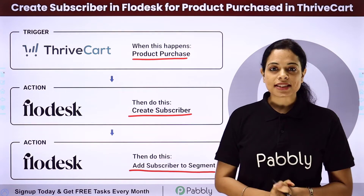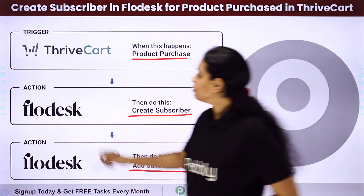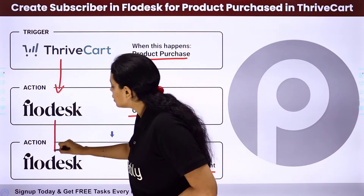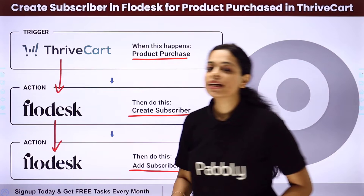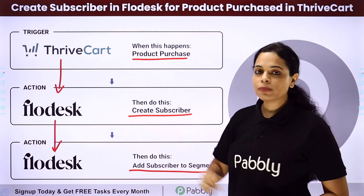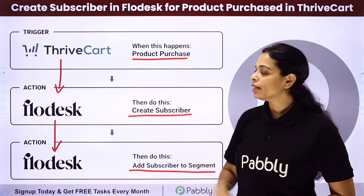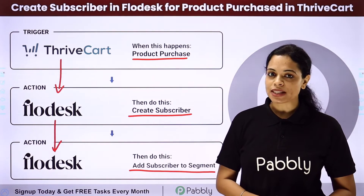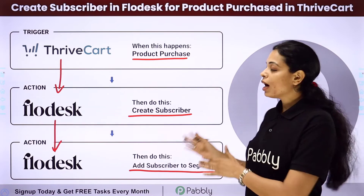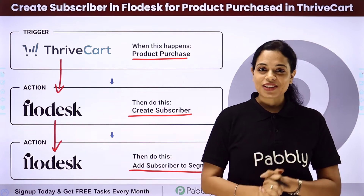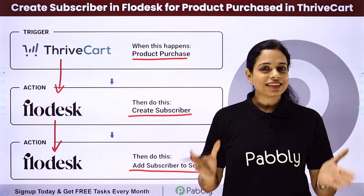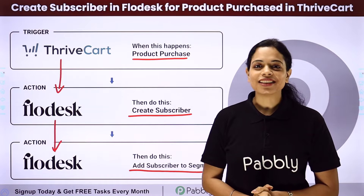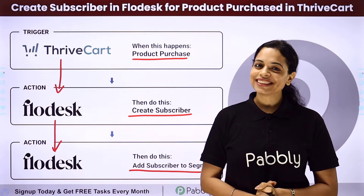Now how can we do this? We will have to integrate these applications using Pabbly Connect. My trigger application will be Thrivecart and my action application will be Flodesk. To understand how you can integrate and automate this entire process yourself, let me take you to my screen.